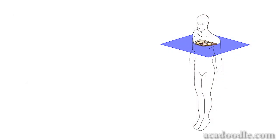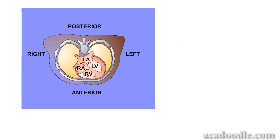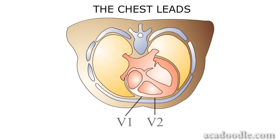If we take a representative transverse section through the chest, you will appreciate that with the heart in anatomical position, the atria lie posterior to the ventricles, and the right ventricle lies somewhat anterior to the left in this plane. V1 and V2, therefore, face the surface of the right ventricle. However, note that they also face the much larger muscle mass of the interventricular septum. These leads are strongly influenced by electrical events in this structure, and V1 and V2 are therefore often referred to as the septal leads.